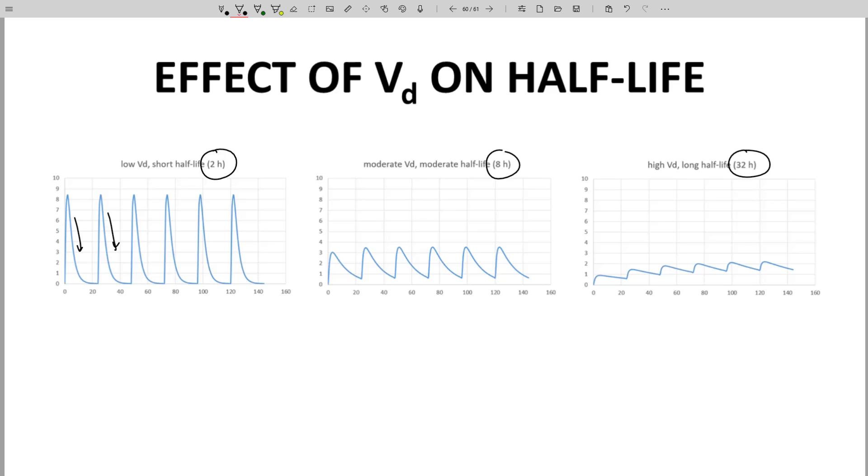since the VD for this drug is low, the drug does not extensively leave the plasma. Therefore, CP really spikes with each dose.